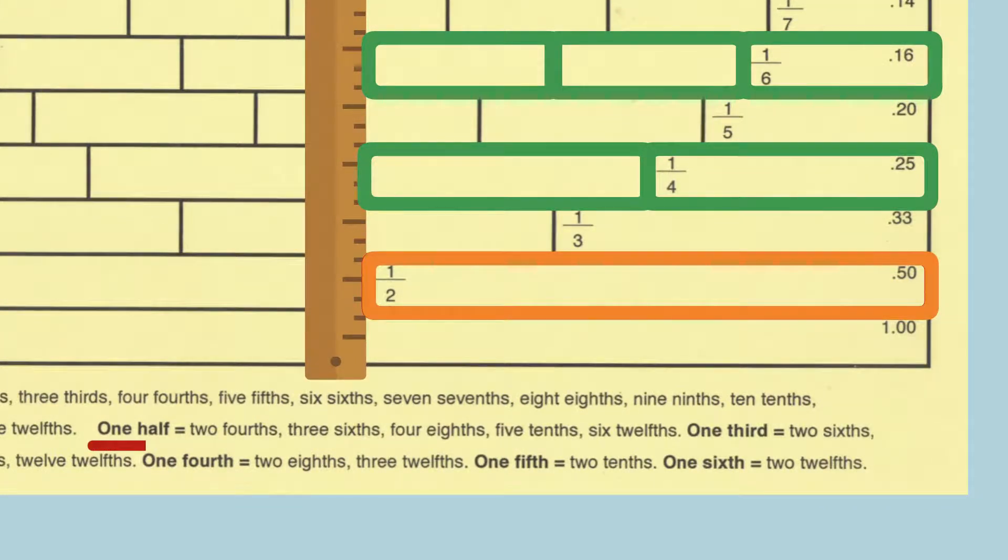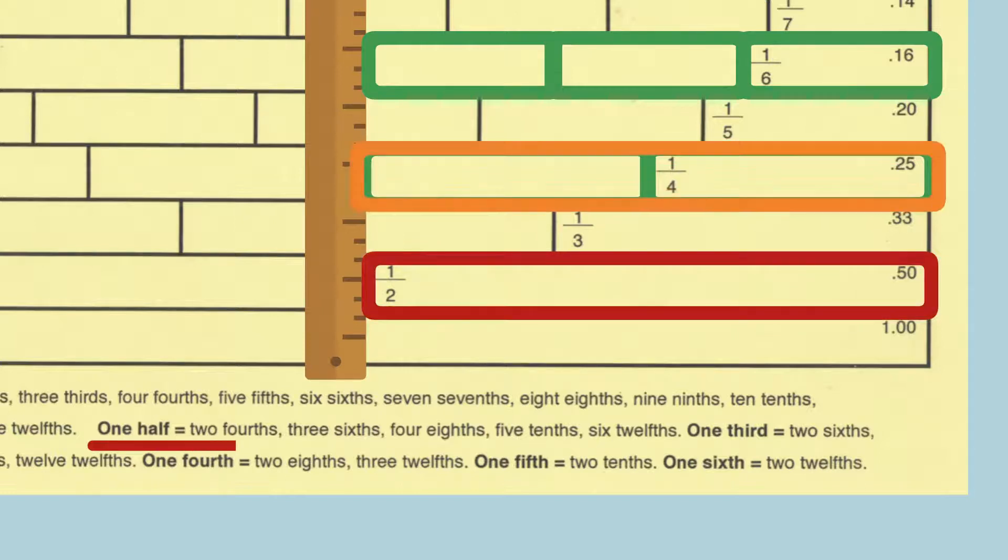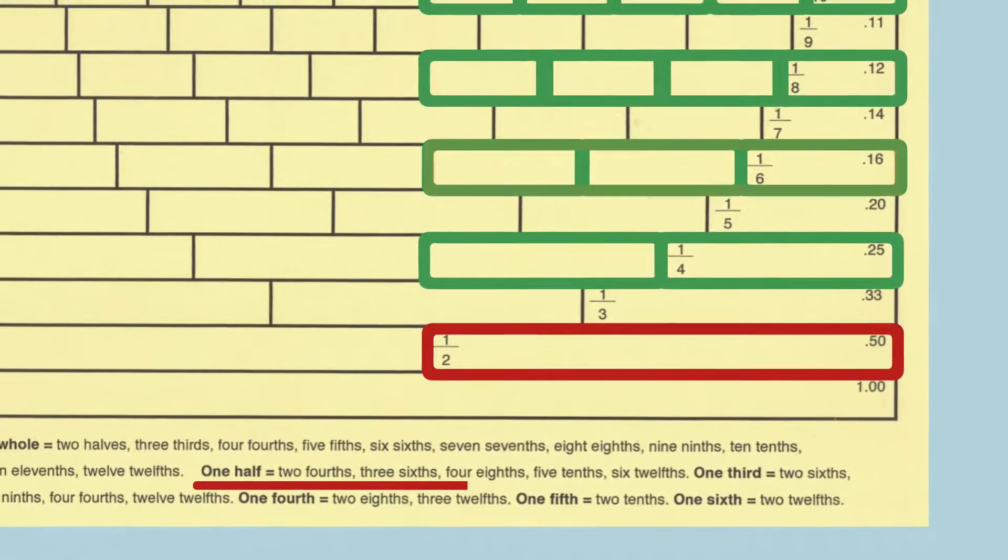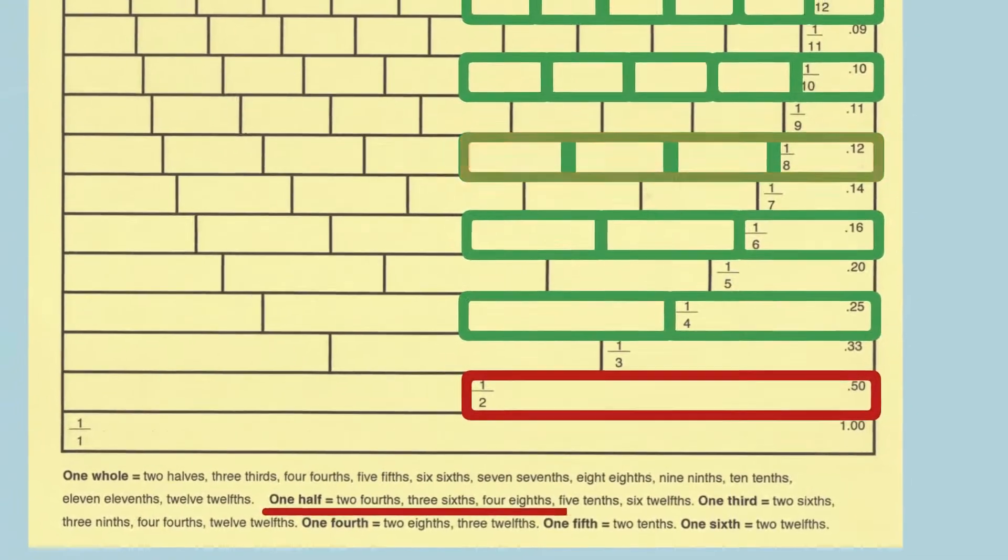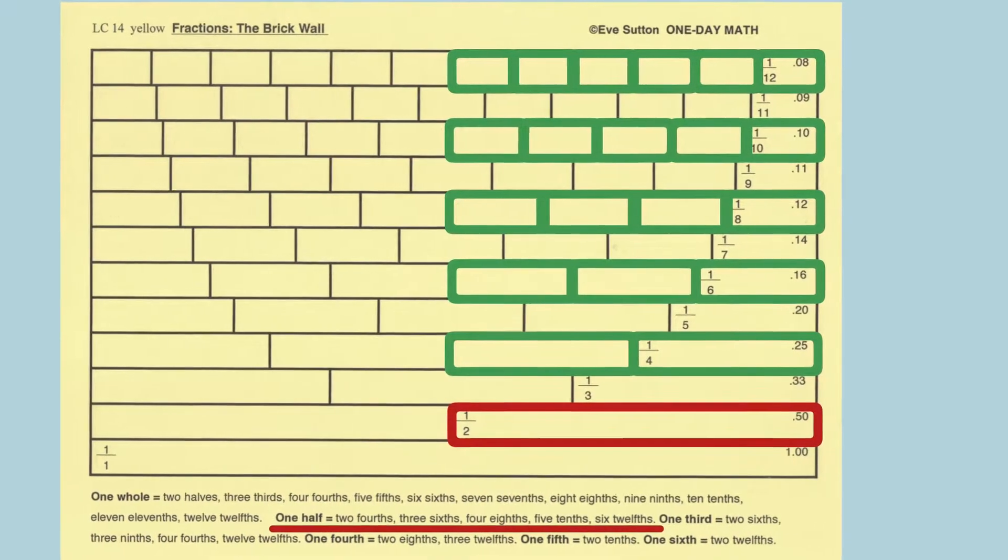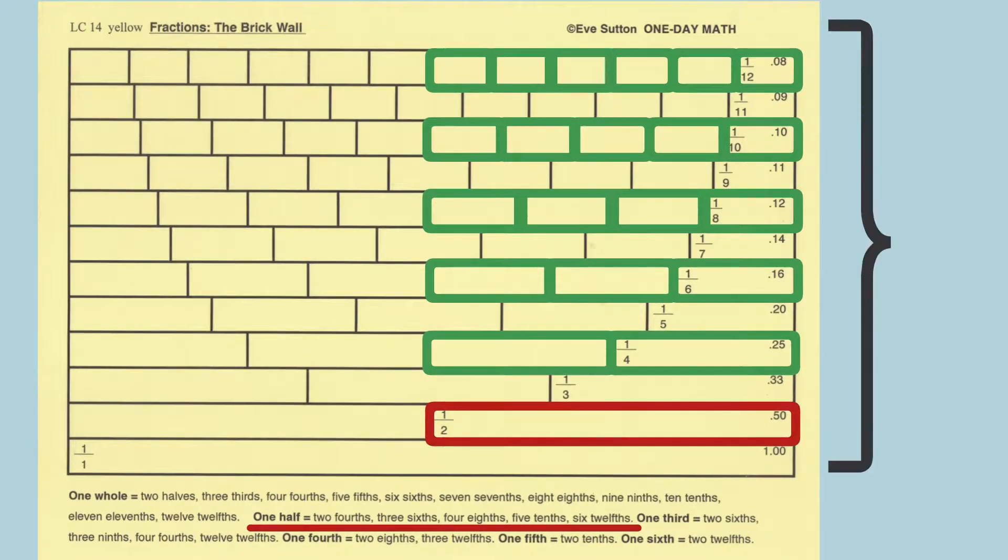One-half equals two-fourths, three-sixths, four-eighths, five-tenths, or six-twelfths. All of the fractions in this set are equal to one-half.